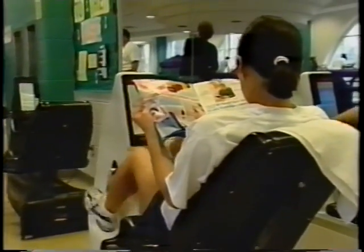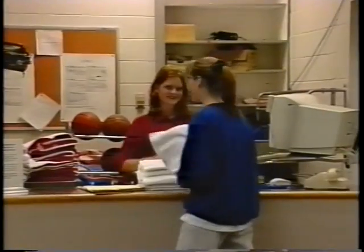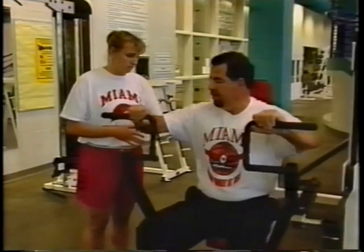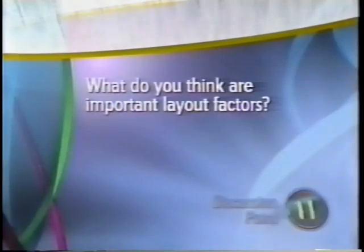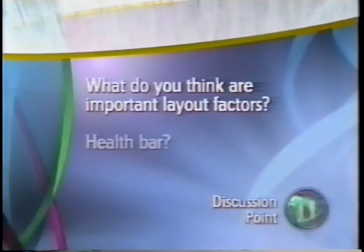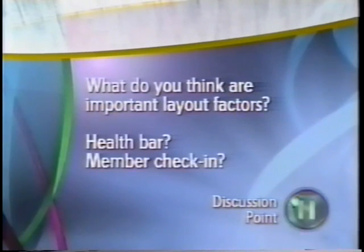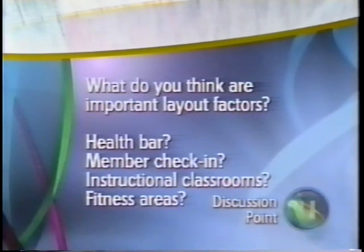What about layout in a fitness center? Designers must consider the various stations the center will include. For example, there will be dressing rooms, equipment and towel issue, classroom space, and fitness areas such as swimming pools, aerobics rooms, gyms, and equipment rooms. What do you think are important layout factors for positioning various parts of the fitness center, such as the health bar, member check-in control station, instructional classrooms, fitness areas, and the track?